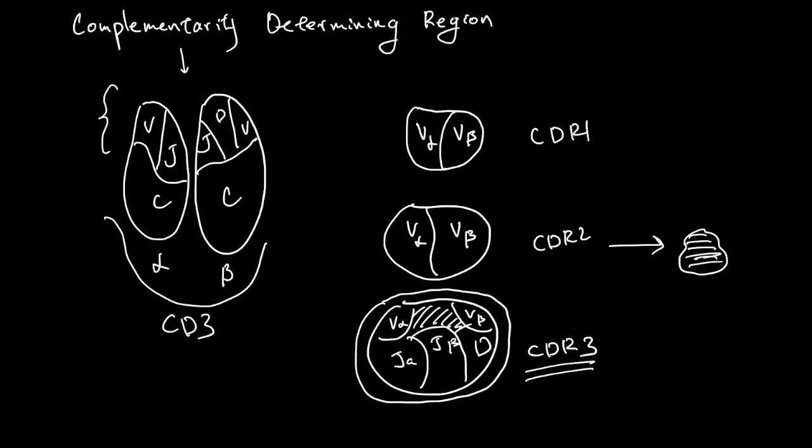So CDR3 is by far the most diverse surface, because it contains V, D, J, recombining protein sequences. And CDR3 heavily influences the type of antigen this receptor can bind to.